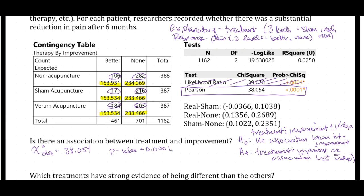How do we answer the question of whether there is an association between treatment and improvement? We have a very small p-value of less than 0.0001. We have 2 degrees of freedom: the number of rows is 3 and the number of columns is 2, so (r−1)(c−1) = 2×1 = 2. Since 38 is much bigger than 2, that's why we have such a small p-value.